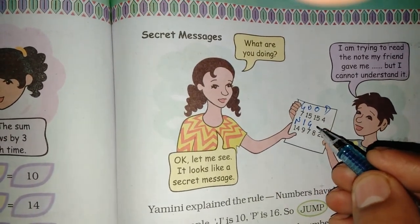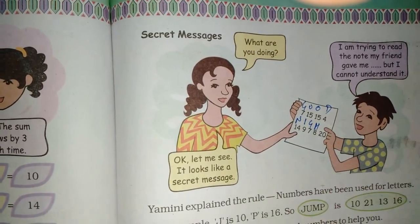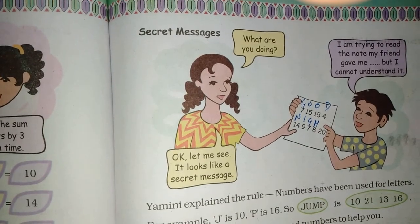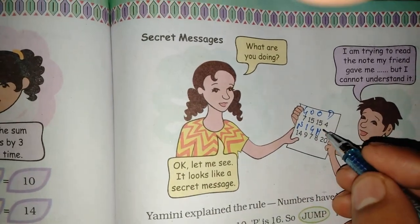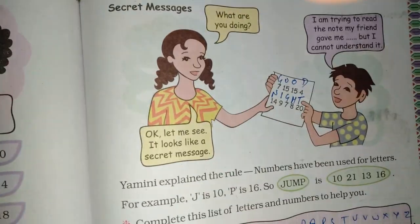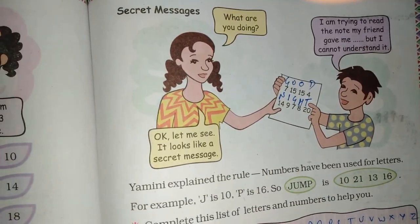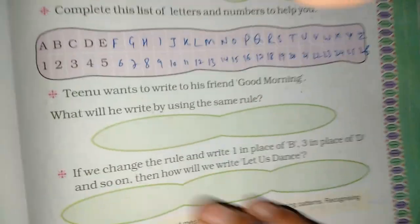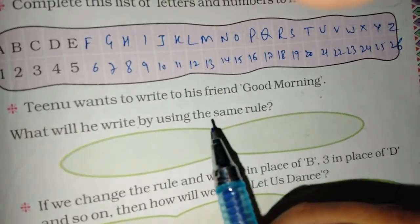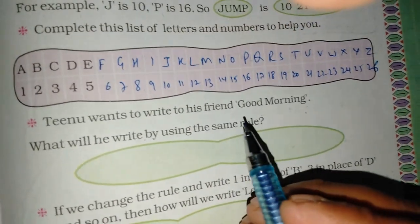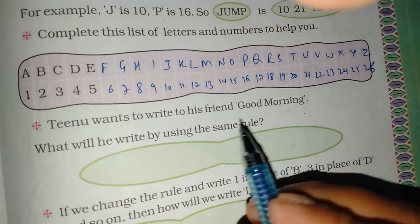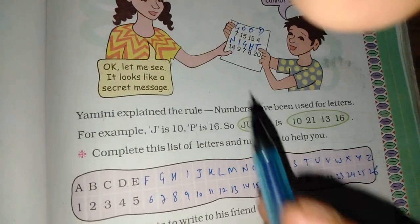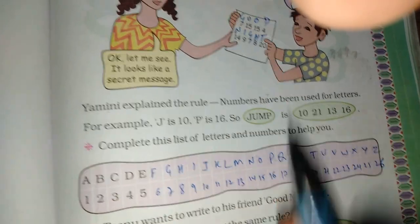8 for 20 for 10. Good night. Now we will make a message — good morning. For G, the number is 7.